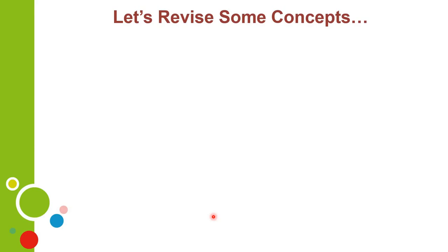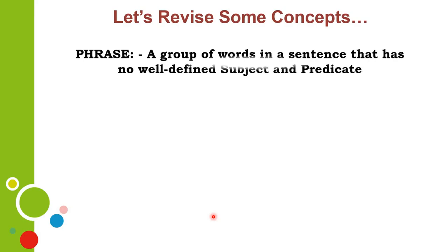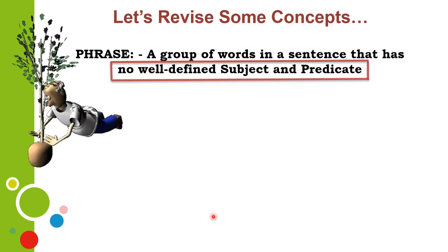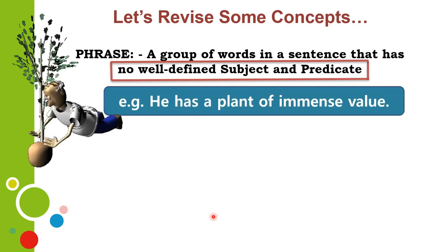Now first, we need to revise some concepts before we go on to the transformation proper. Let's understand the difference between a phrase and a clause. A phrase is a group of words in a sentence that has no well-defined subject and predicate. It's very clear that they do not have a subject and a predicate. Now, some examples for this.